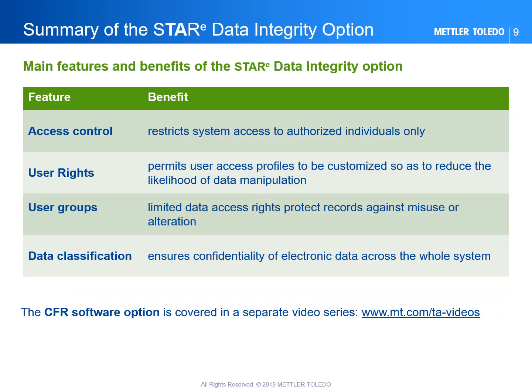This slide shows a summary of the main features and benefits of the STAR Data Integrity Option, each discussed in separate videos. Access control restricts system access to authorized individuals only. User level management permits user access profiles to be customized to reduce the likelihood of data manipulation or removal. User groups provide limited data access rights to protect records against misuse or alteration. Finally, data classification ensures confidentiality of electronic data across the entire system.